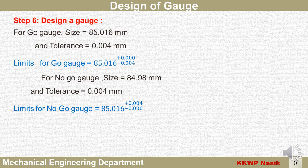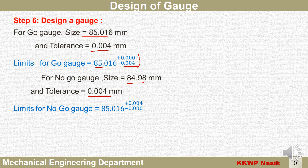Step six — design the gauge. For go gauge: size = 85.016 mm, tolerance = 0.004 mm, so limits are 85.016 +0.000/−0.004. For no-go gauge: size = 84.98 mm, tolerance = 0.004 mm, so limits are 84.98 +0.004/−0.000.